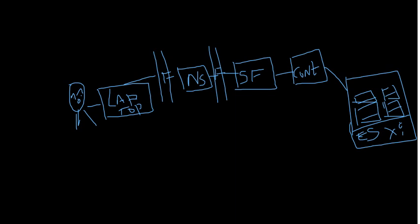So there is a user with a device — laptop, desktop, iPad, iPhone, or any other device. The user opens up a web browser and types the Citrix URL. The user connects to the NetScaler first, and after NetScaler the user connects to the StoreFront server.